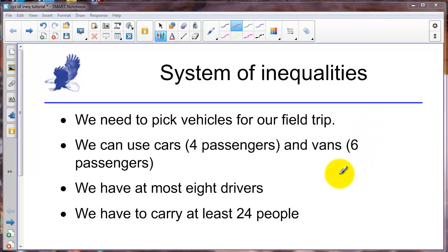We have a choice between cars and vans. In this example each car can handle four passengers and each van can handle six passengers. And our constraints are that we have at most eight drivers, so meaning we can have at most eight vehicles.